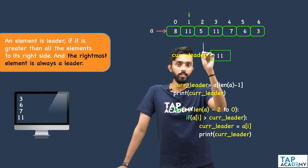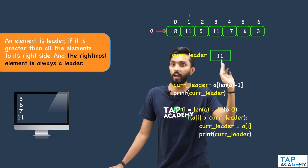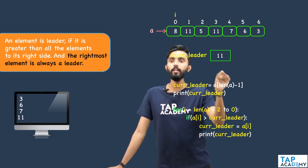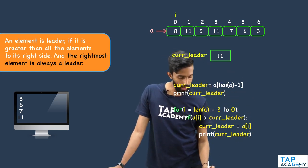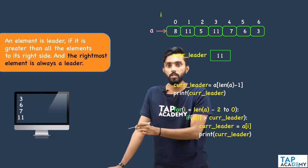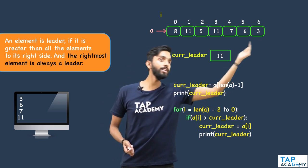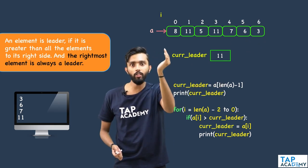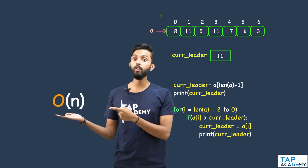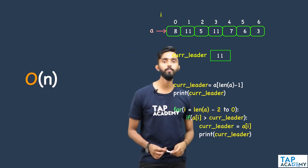By the end of traversal, all leaders have been printed. This is more efficient because there is only one loop moving from the last element to the first — executing n times. The time complexity is O(n), not O(n²). Quadratic became linear — that is a significant optimization.